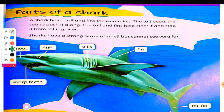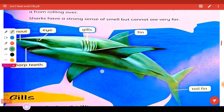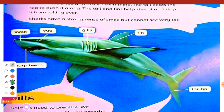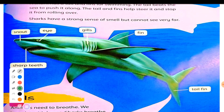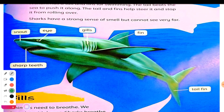Let's look at this shark and see the different parts of it. In the picture we have a shark, so I'll show you the different parts. This part, as you can see here, those are the sharp teeth of the shark.